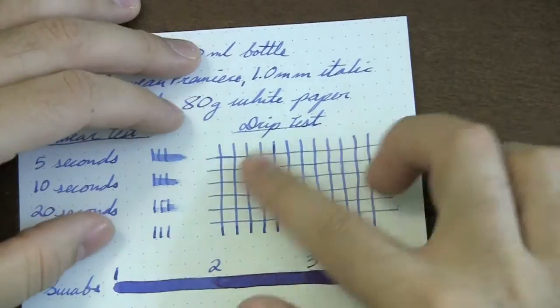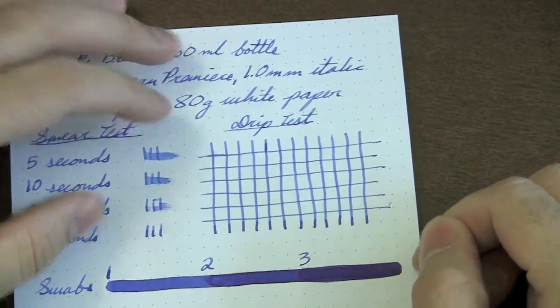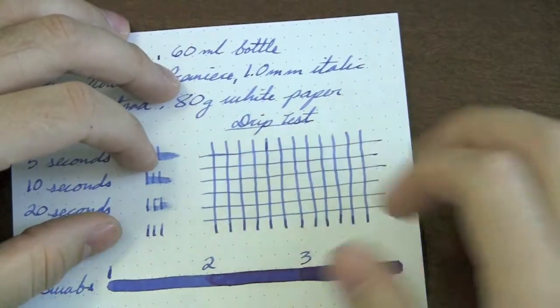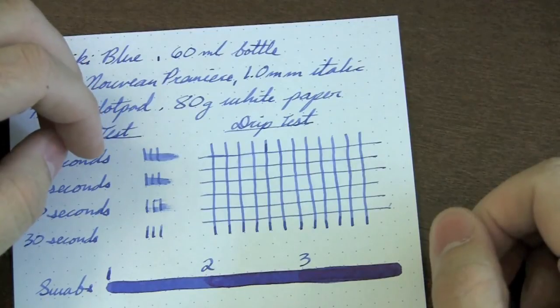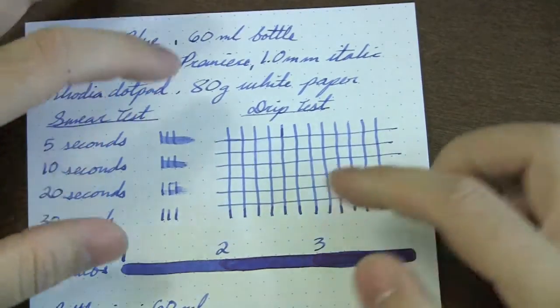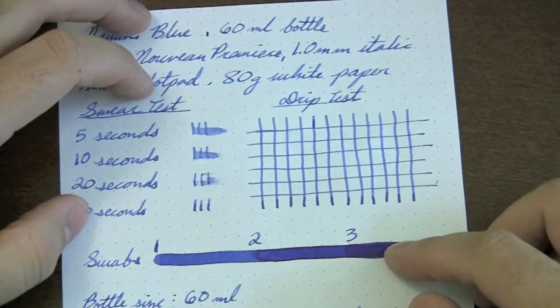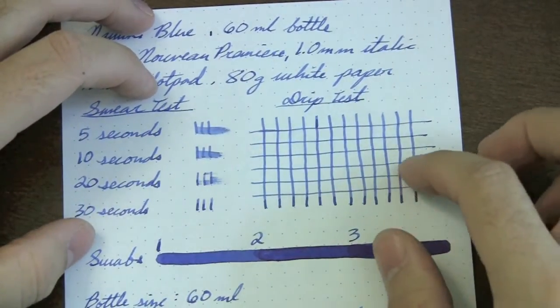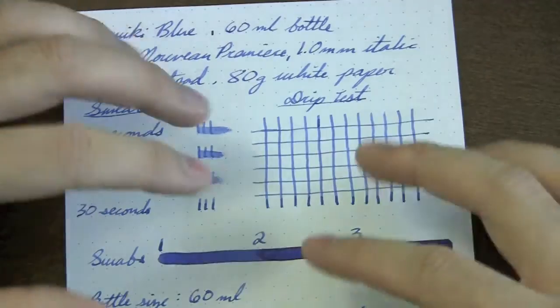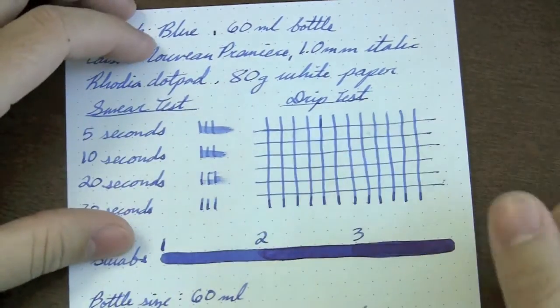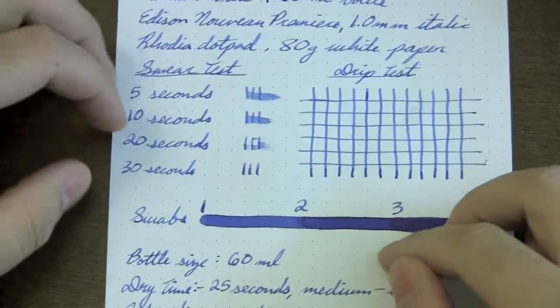Drip test. You probably can't even tell that I did a drip test on here, but I did. I did three drops on here and left it on there for about a minute, and then soaked it up, and you can hardly tell that anything happened. So that is the shining glory of this ink, is that it is incredibly water resistant. It's not even advertised as such, but I found that it's really, really good water resistance.